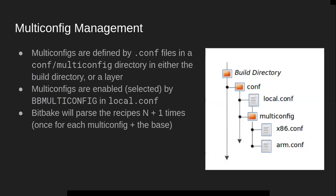So how do you define or create multi-config? You define multi-config by putting conf files in a conf/multiconfig directory. In this example, this is in the build directory. You've got your conf and there's your normal local.conf, but then you have this multiconfig directory and under there you have two multi-configs defined — in this case an x86 multi-config and an arm multi-config. By putting these conf files in there, that makes those multi-configs available to be used, but not necessarily activated when you run a build.